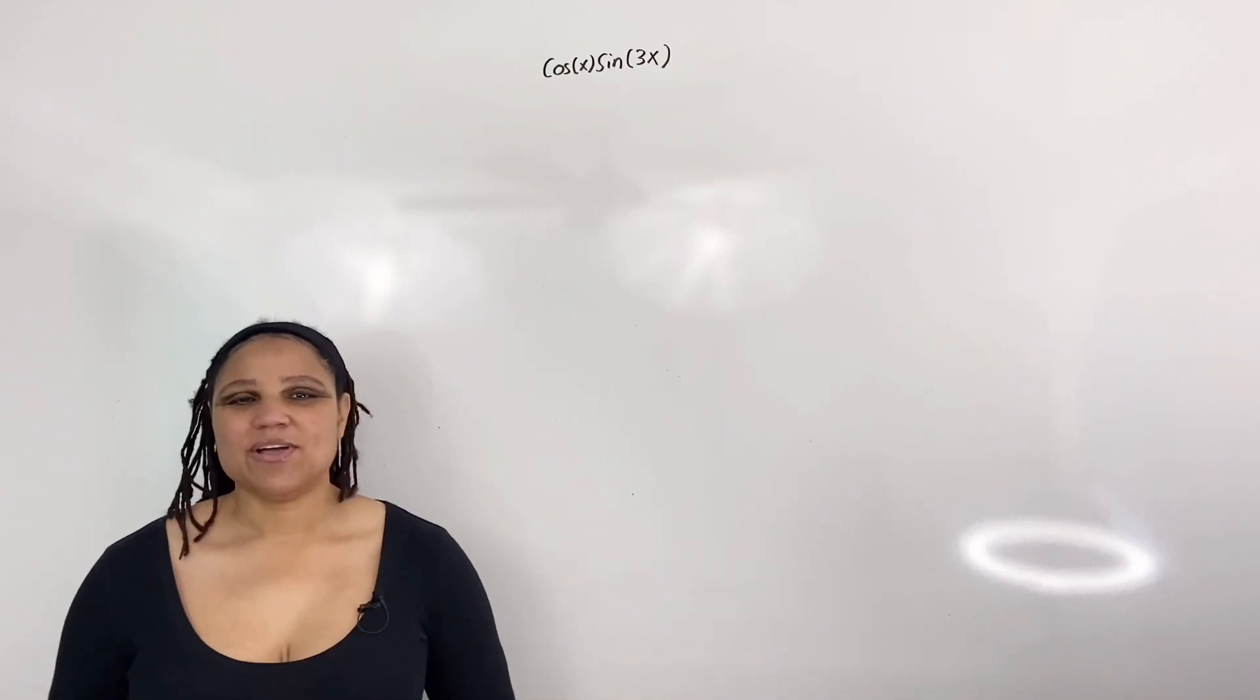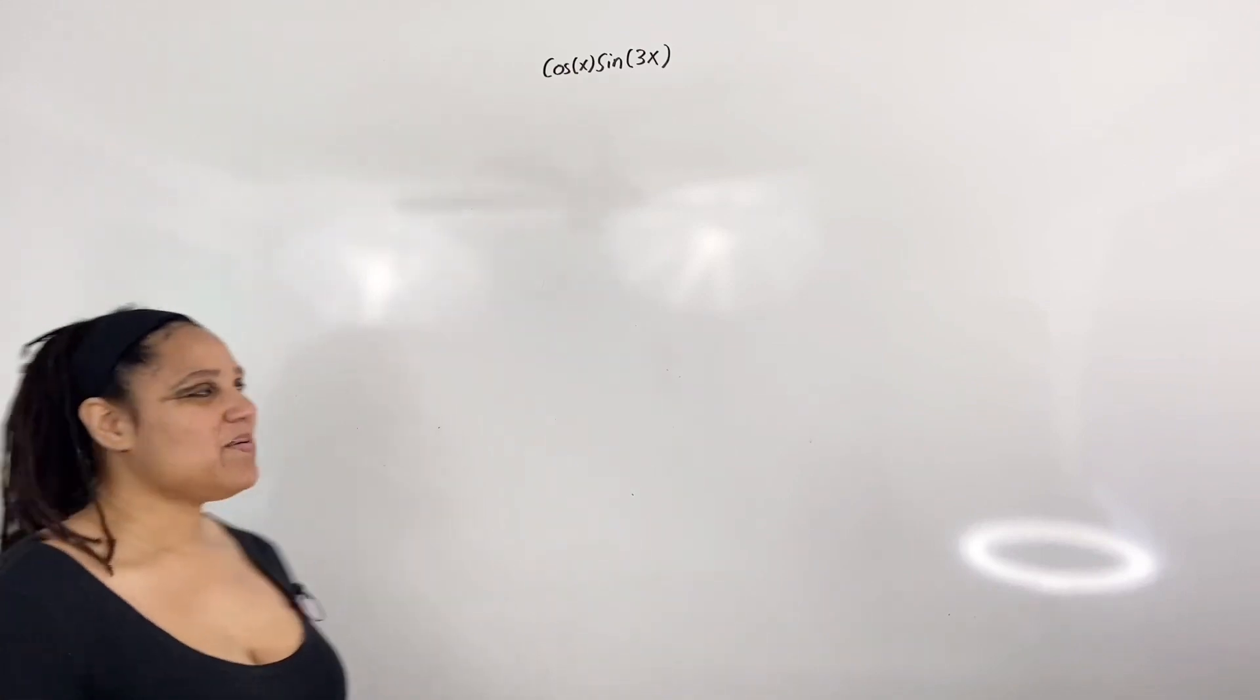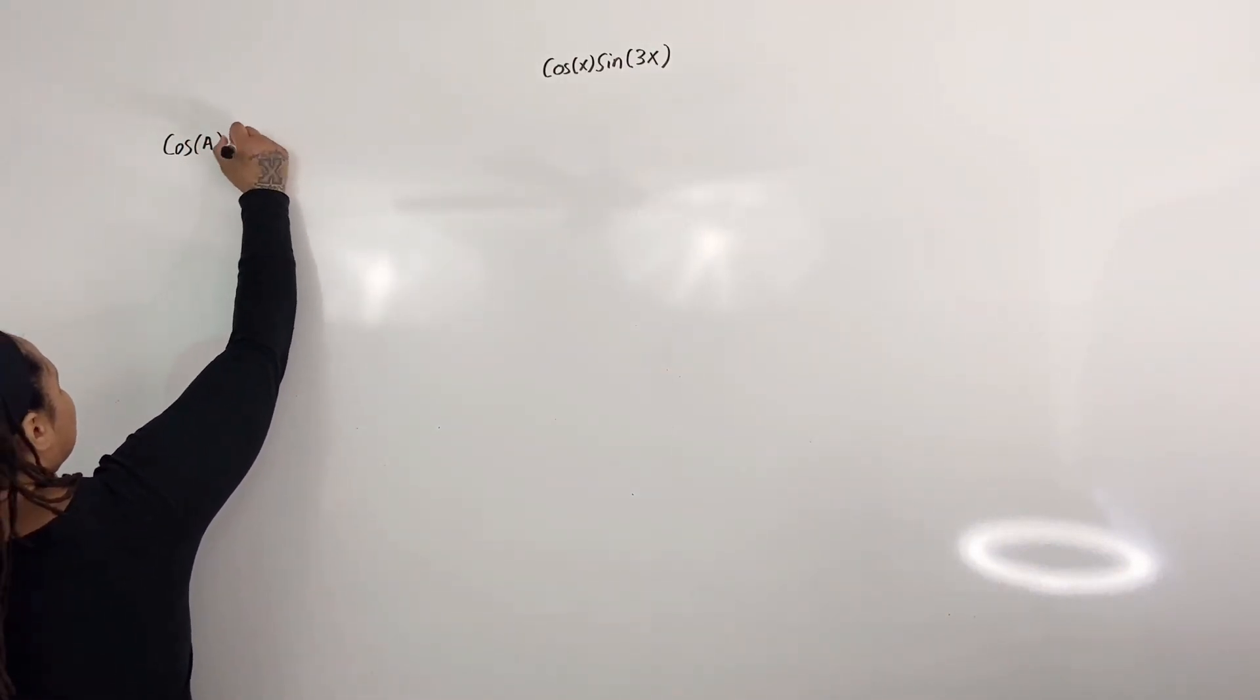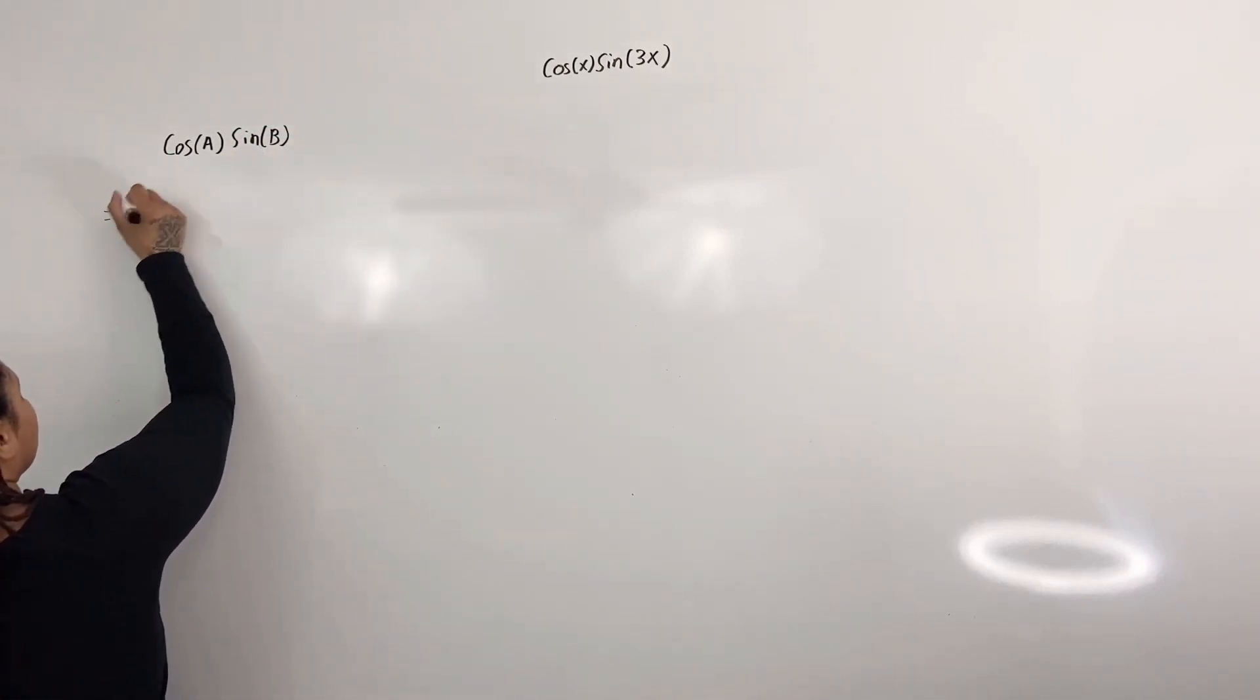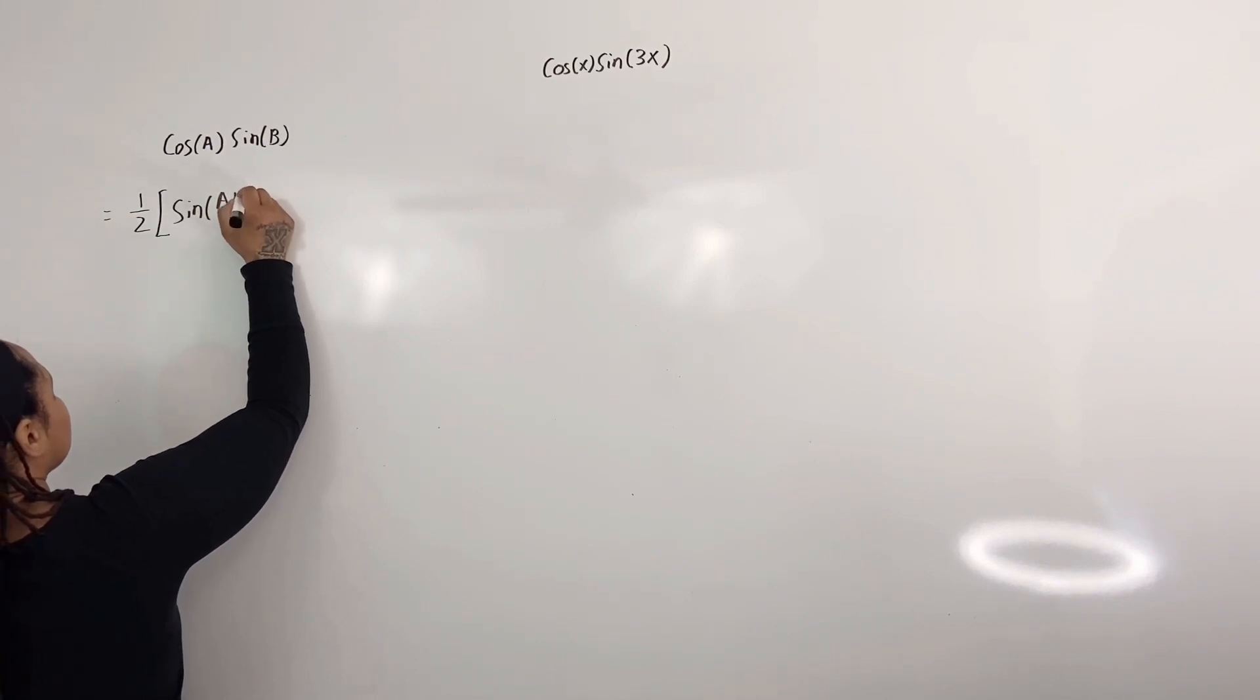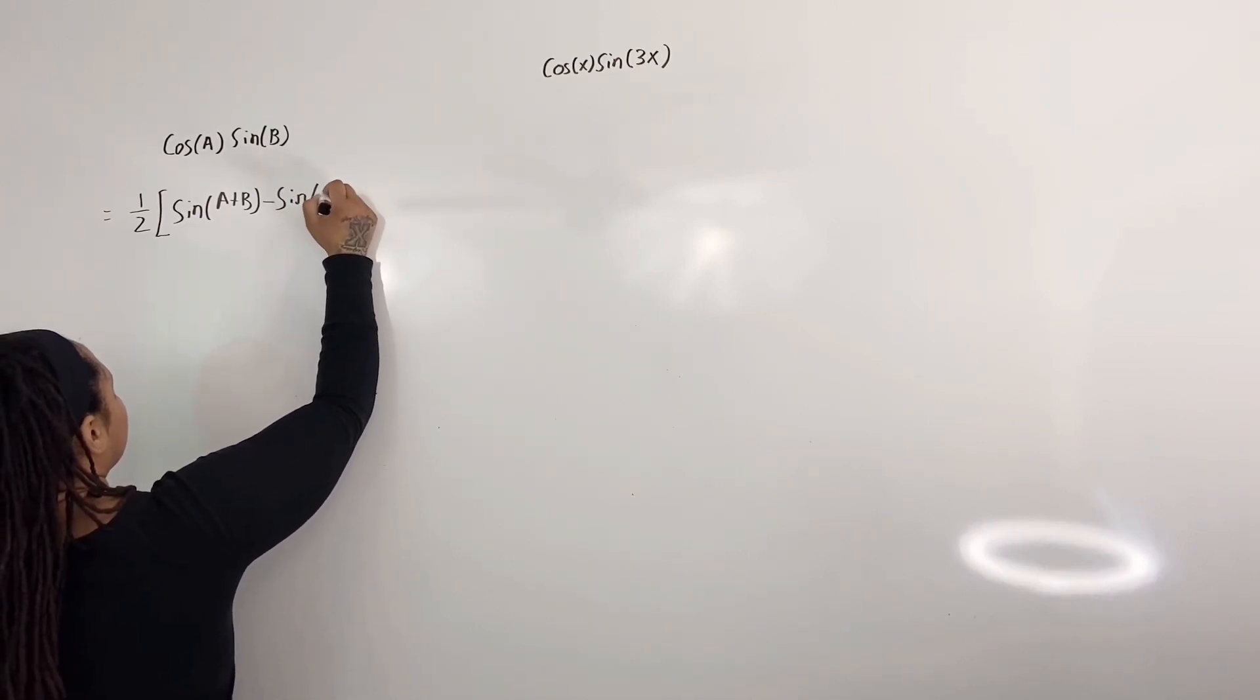So let us recall one of our product-to-sum identities. We know that cosine of a times sine of b is equal to one-half times sine of a plus b minus sine of a minus b.